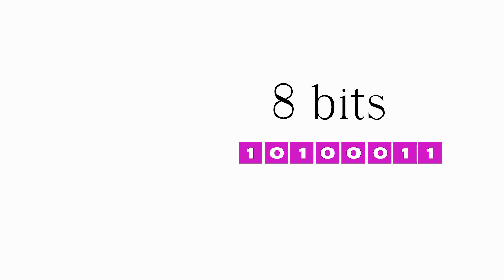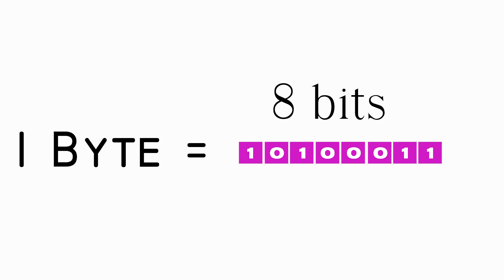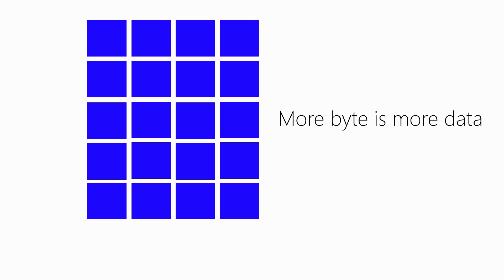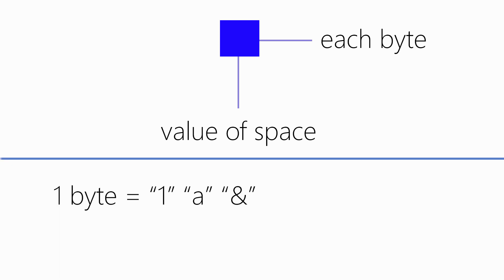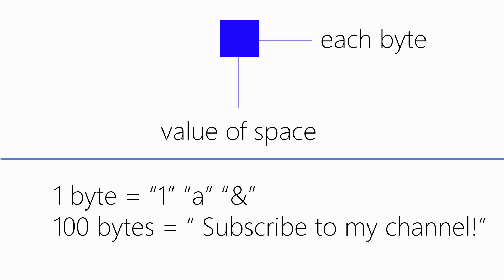If we have 8 bits, it is called a byte. A byte can represent 256 states of information — for example, numbers or a combination of numbers and letters. These bytes determine how much data we have stored. More bytes means more data. You can think of each byte as the value of space it takes to store. One byte could be equal to one character, and a hundred bytes would equal an average sentence.